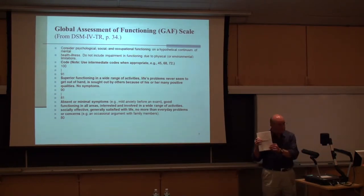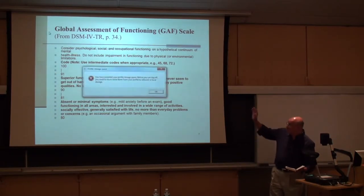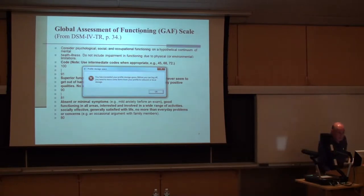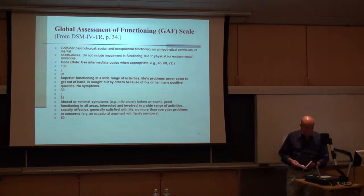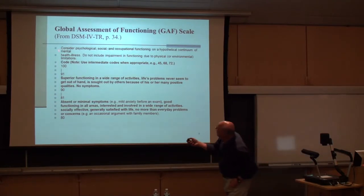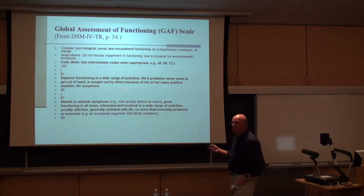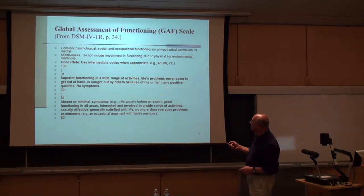That scale is the Global Assessment of Functioning Scale. It's one of the first things you encounter when doing diagnosis. At 100%, you have superior functioning — all the way to the right of the bell curve — no symptoms at all. You move out and see minimal symptoms, a little anxiety. Further down, symptoms are present but transient. Some mild symptoms appear, and then you face the question: where do we have to get before we start treatment?